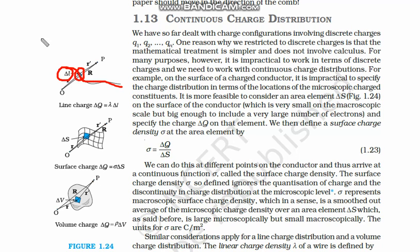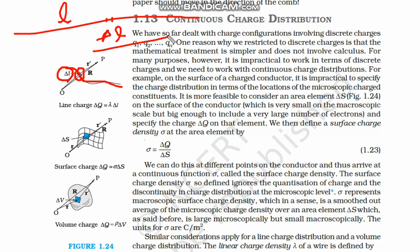When we move to this type of mechanics, we take a very small element. Suppose there is a very big line and we take a very small piece of it — that is called the small element delta-l. The whole line is L, and the small element of this line is delta-l, which is very very small. The total charge on this line is Q, and the very small charge on this element is delta-q.